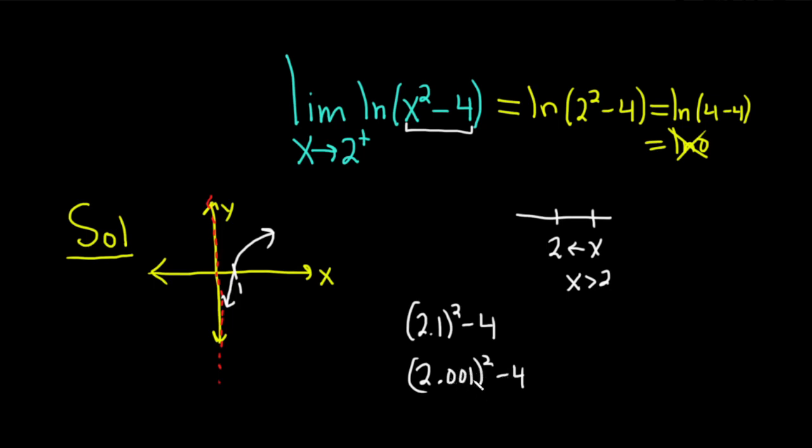Eventually, if you got to 2, you would just get 0. We know that already. So the closer you get to 2 from the right, the smaller this quantity becomes.